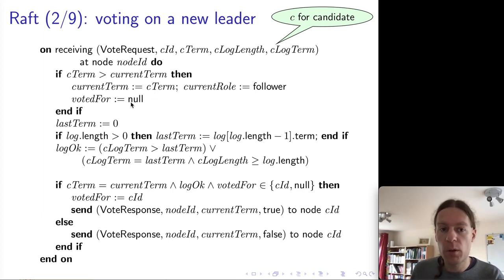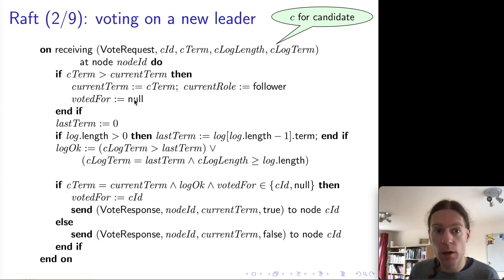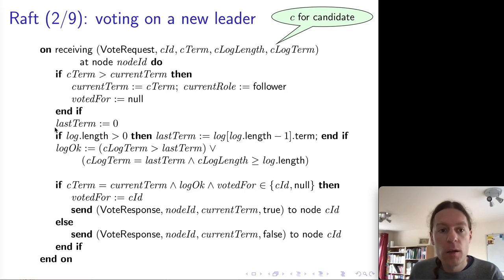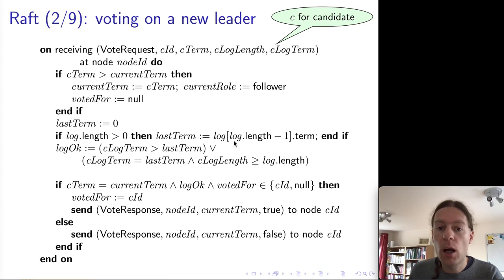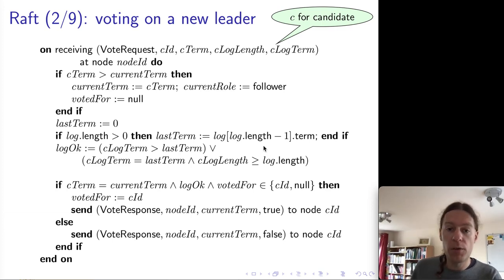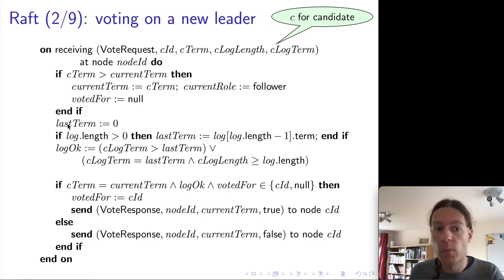We do that by setting the recipient's current term to be the candidate's term, transitioning into the follower state regardless of the node's previous state, and setting votedFor to null — meaning we have not yet voted for any candidate in the current term, because we just changed the current term. Next, we set up the lastTerm variable similarly to the candidate side: we look at the last log entry on the recipient and get the term number of that last log entry.